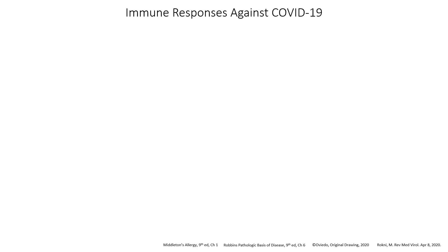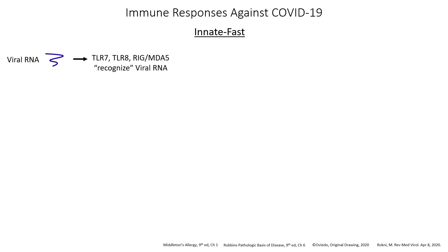The immune response can be divided into innate and acquired immunity. Innate immunity is a fast response so that the body can quickly respond to an invading virus. There are molecules called TLR7, TLR8, and RIG/MDA5 which can recognize the viral RNA. These will then produce inflammatory reactions which can produce TNF, interferon alpha, and interferon beta.